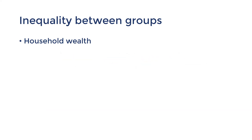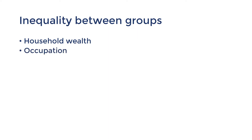Another obvious differentiator of income is occupation. Groups in high-skilled, professional occupations will earn a higher income compared to unskilled labour. It also depends on the industry — whether there's high demand relative to supply of workers.